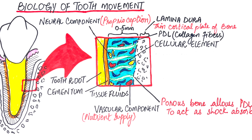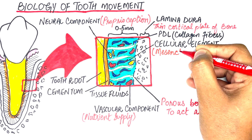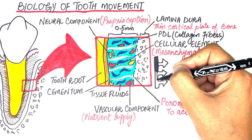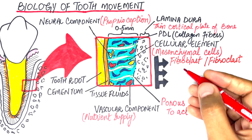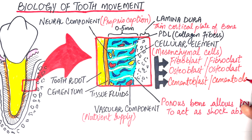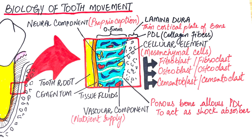The collagen fiber bundles constantly remodel through formative and destructive cells as a response to normal tooth function. The cells responsible for remodeling PDL fibers arise from multi-differentiating mesenchymal stem cells, which can differentiate into any of the following based on specific needs: fibroblasts and fibroclasts form and destroy collagen; osteoblasts and osteoclasts form and destroy alveolar bone; and cementoblasts and cementoclasts form and destroy cementum. In short, the mesenchymal stem cell differentiates into formative cells with the suffix -blast and destructive cells with the suffix -clast.